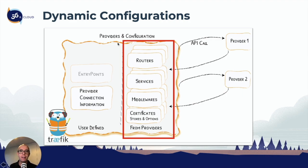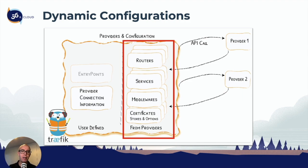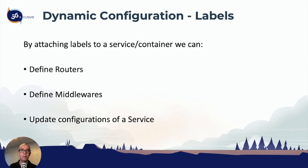What we do is add a label to the service or container, and then we can enable a router, a service, middleware, certificates, and whatever else is available in the provider. We can add a label and define exactly what we want in the service.